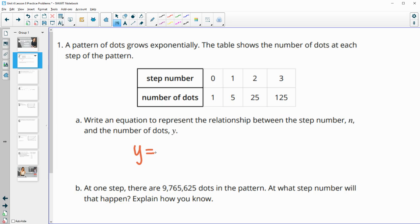So y is going to equal, and since it's growing exponentially, we want our initial value, which is one at step zero. Then we want to times that by our growth factor to the n power. If we look here, these are growing by a factor of five. So if we multiply by five, we keep getting the next number of dots. So y would equal one times five to the n. And really, since the initial value is one, you don't really need that. So you could just have it like this.